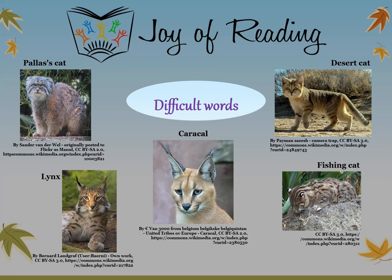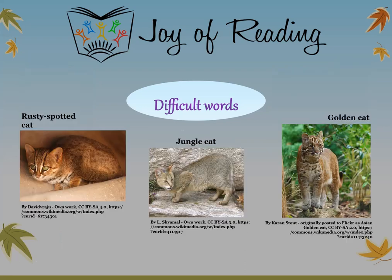Caracal — a medium-sized wild cat with tufts of hair on the tips of its ears. Fishing cat — a wild cat about double the size of a house cat that lives near rivers, swamps, and streams and loves to fish. Rusty spotted cat — a wild cat that is smaller than some house cats. Jungle cat — a medium-sized wild cat that looks like a house cat. Golden cat — a medium-sized wild cat that looks like a house cat.